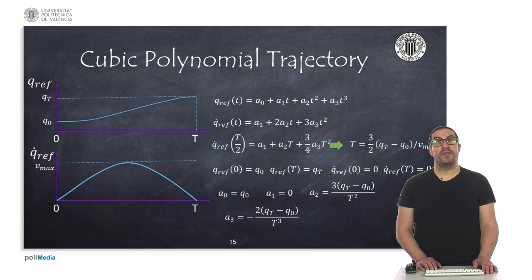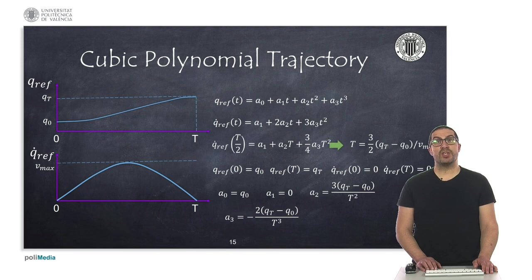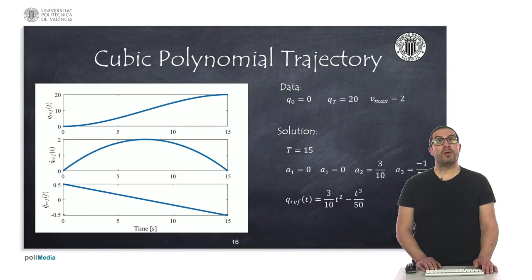Therefore, solving the maximum of that quadratic expression for the given maximum velocity leads us to know the actual trajectory time. Once we know the trajectory time, we can find out the values for the cubic expression by imposing conditions such as initial and final velocity and position. That implies solving a linear system of equations with four unknowns. Here I directly show the actual values for the coefficients. In this example, we generate a cubic polynomial trajectory with a maximum velocity of 2 degrees per second. The trajectory takes 15 seconds to reach the final position, and the actual cubic expressions are shown below.